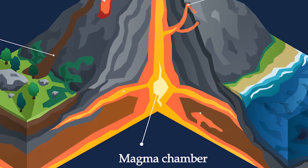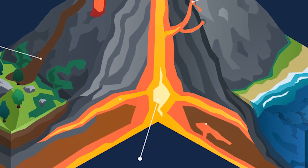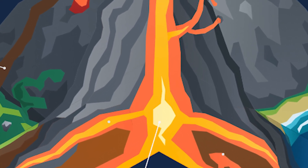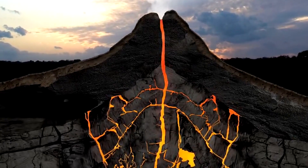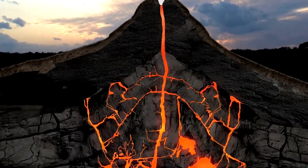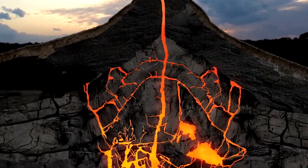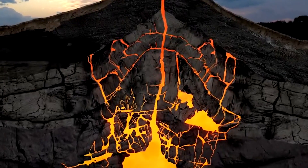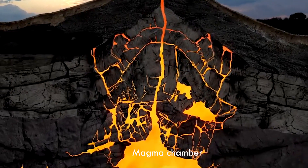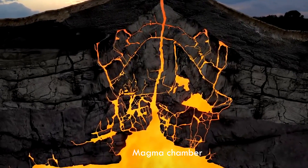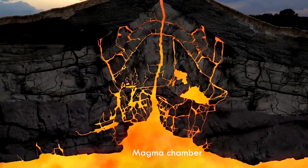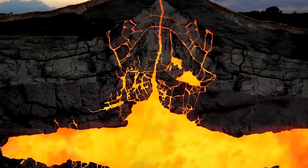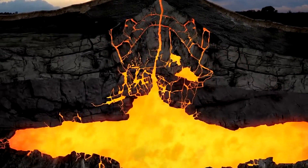A magma chamber is a large pool of liquid rock beneath the surface of the Earth. The molten rock, or magma, in such a chamber is under great pressure. Given enough time, that pressure can gradually fracture the rock around it, creating a way for the magma to move upward.